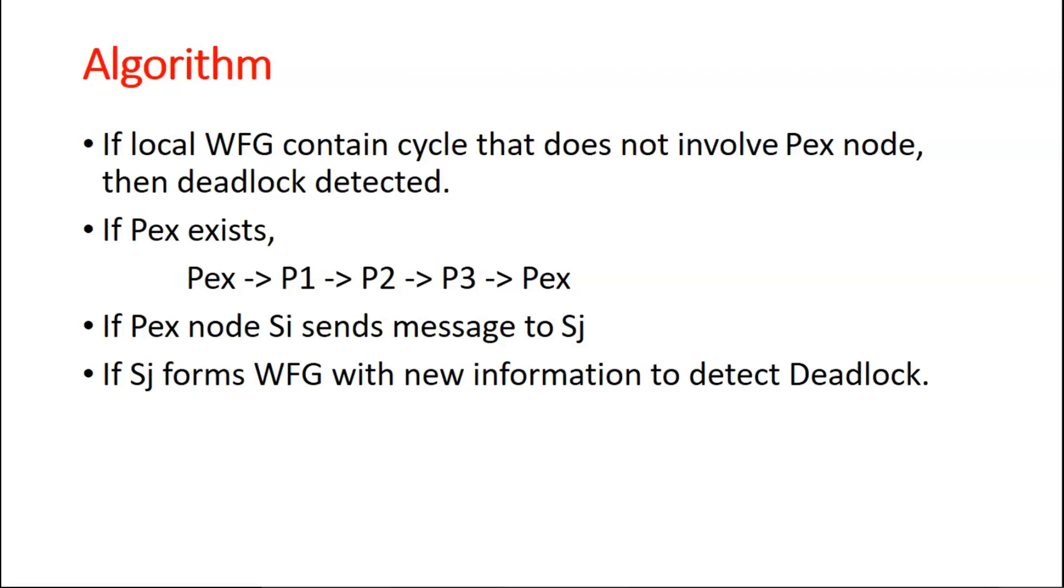Coming to the algorithm. If any local wait-for graph contain a cycle that doesn't involve any PEX node, then deadlock detected. There is a local wait-for graph. There is a PEX exist. Suppose, if there is a cycle exist, if the external process node PEX, SI sends message to SJ, then now what will happen is, SJ, the receiving site, forms a wait-for graph with information to detect, with new information to detect deadlock. This is what the simple algorithm.